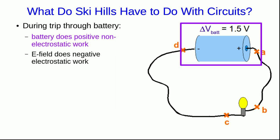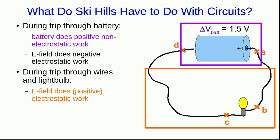or rather in the opposite direction of the forces that the E field exerts on them—the E field is doing negative electrostatic work. And then, during the trip through the wires and the light bulb, the E field is doing positive electrostatic work.